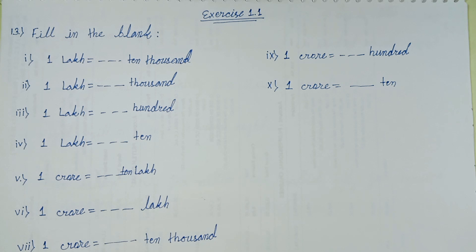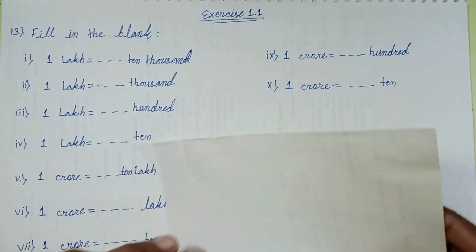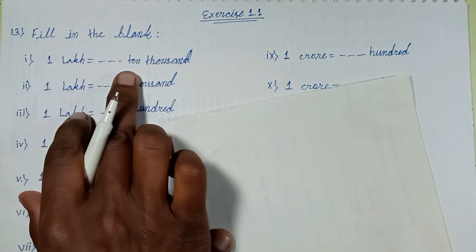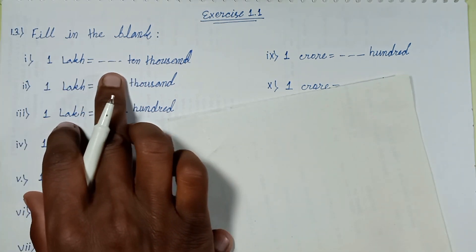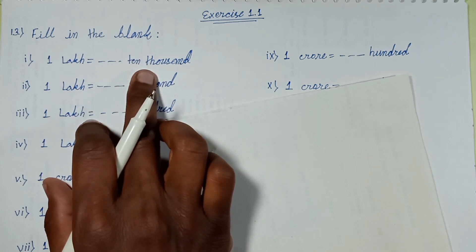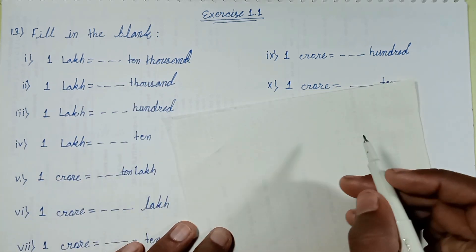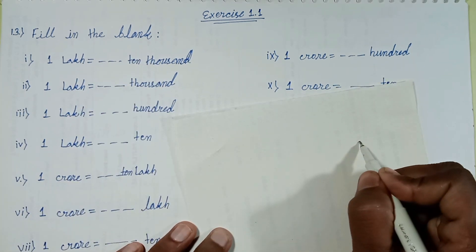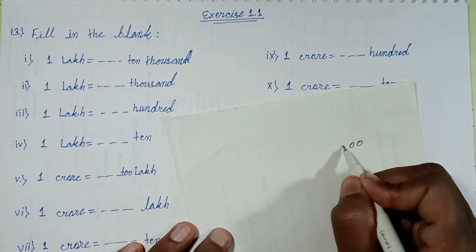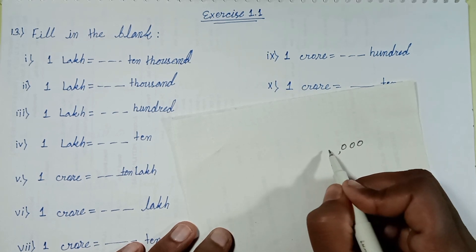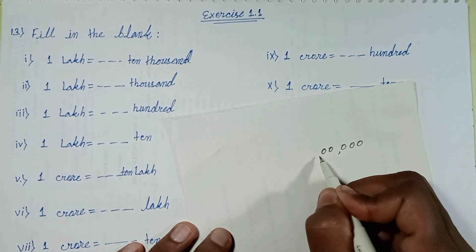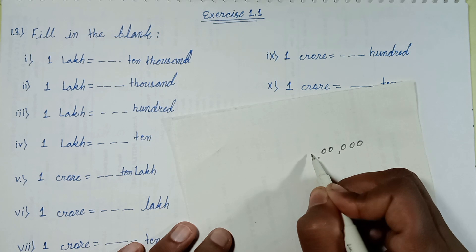The big concept: one lakh is equal to how many thousands, how many ten thousands? Let's count the place values: ones, tens, hundreds, thousands, ten thousands, and one lakh.